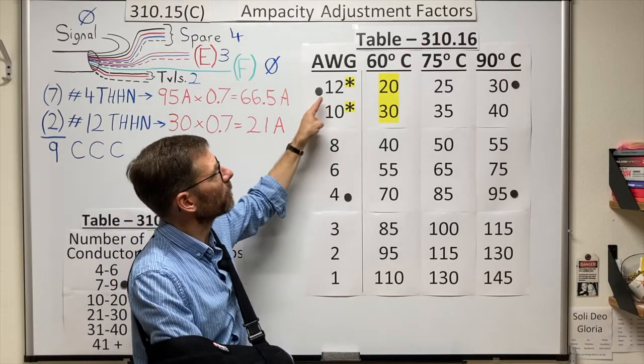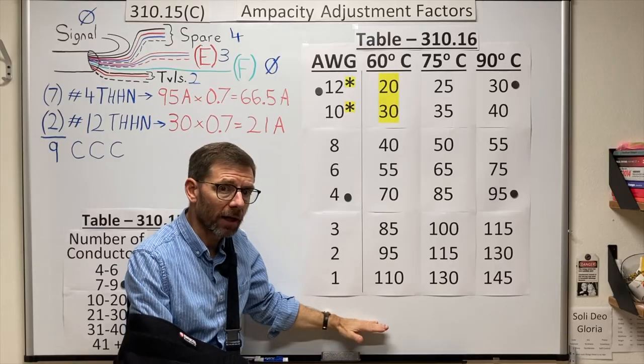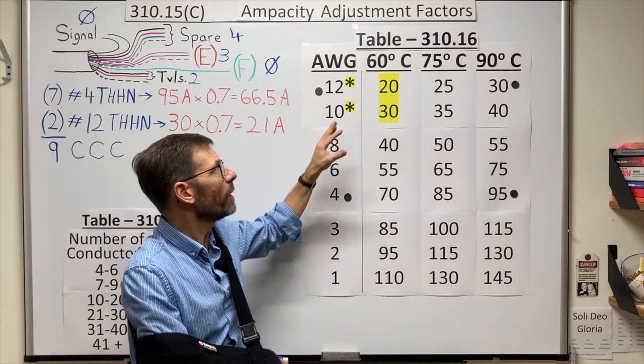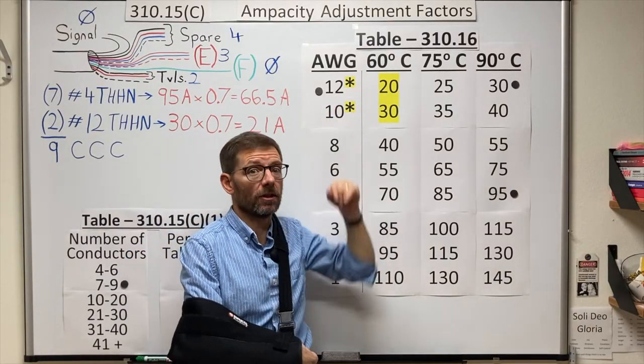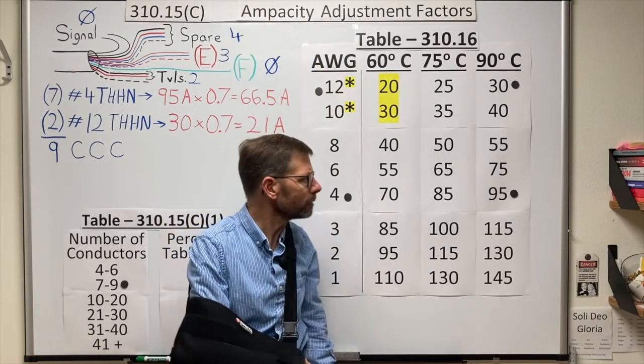But I also picked number 12 just to remind us of the asterisk here that explains where to go at the bottom of the table. Always double check your small conductor rules if you're using number 10s, 12s, 14s, or smaller.